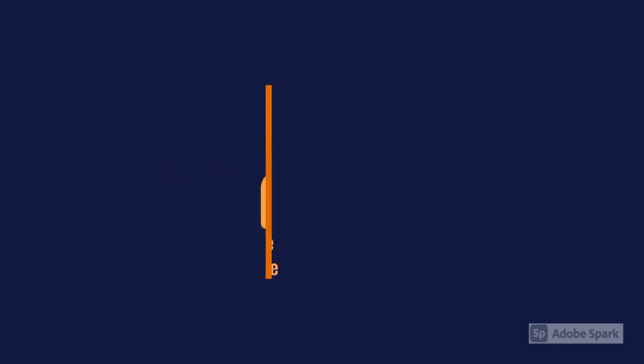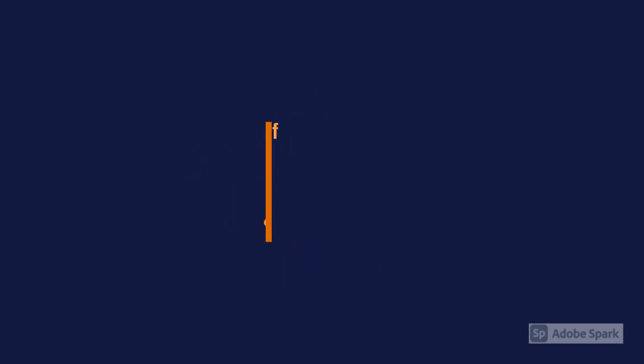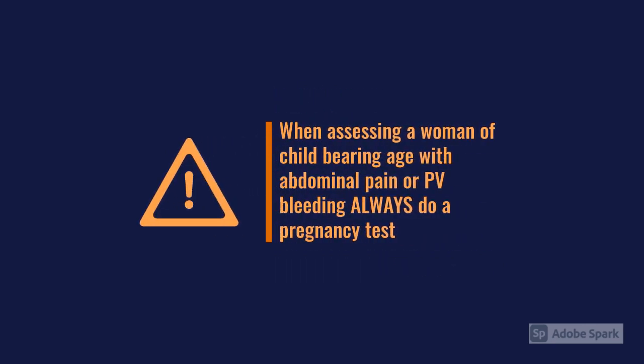Another patient group to be aware of is young females of childbearing age who suddenly collapse or are very hypotensive. That's often a very subtle and very concerning presentation of ectopic pregnancy, where they've had a major hemorrhage from the rupture and essentially have no blood pressure left. It's always important when assessing a young female of childbearing age presenting with abdominal pain or PV bleeding to do a pregnancy test, because you don't want to miss an ectopic pregnancy.